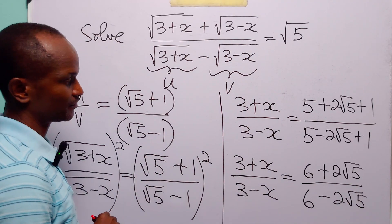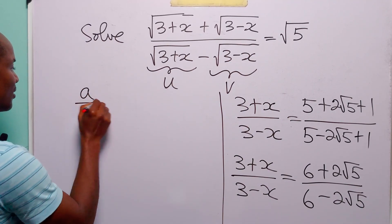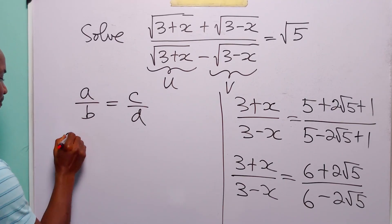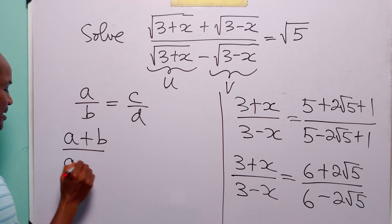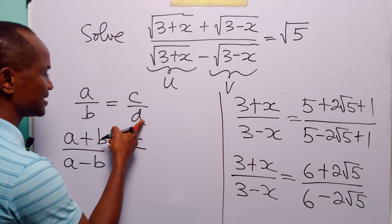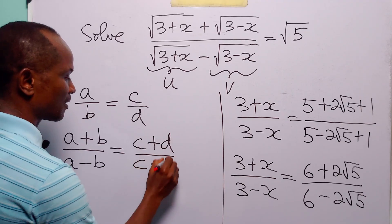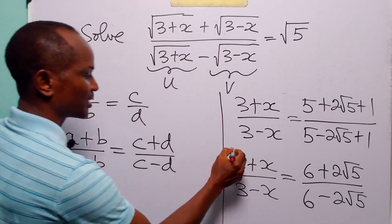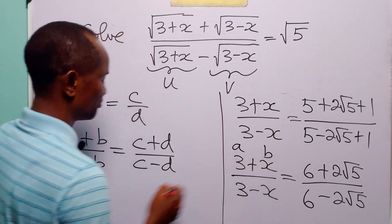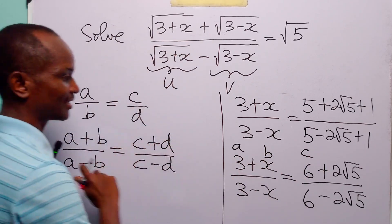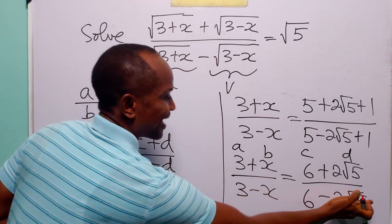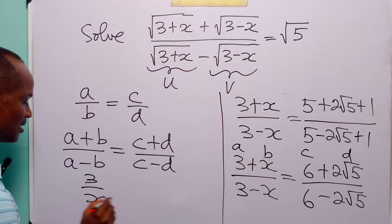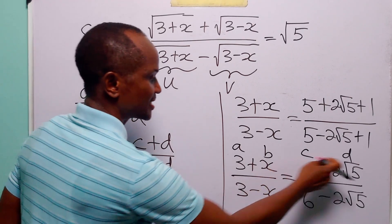Recall that if a over b equals c over d, then from our properties of proportions, (a plus b) over (a minus b) must equal (c plus d) over (c minus d). Looking at our equation, if we call 3 'a', x 'b', 6 'c', and 2 root 5 'd', then we can write this as 3 over x equal to 6 over 2 root 5.